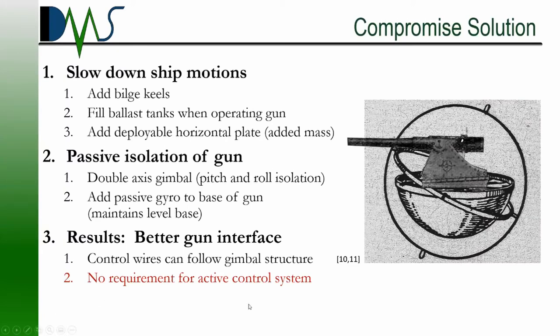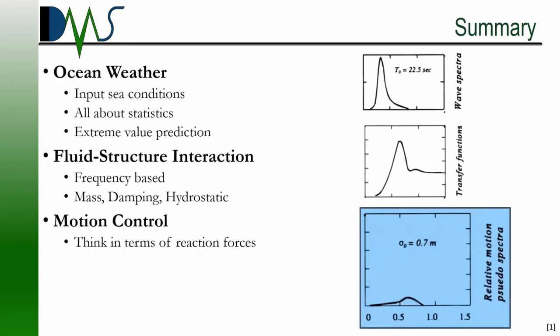We also get a better gun interface. If we're thinking about how to run wires between the ship and the gun, we now have a clear way — we can run them along the arms of the gimbal. Is that the best option? Maybe, maybe not. That's where the seakeeping analysis would come in — you'd have to look at different components and the relative magnitudes of your different solutions. That was just one example of how you could apply seakeeping analysis to motion control. We talk about the output a lot, but we need to know all of the inputs and the interactions to gauge which method is best, and even then it may not always be the optimal solution.